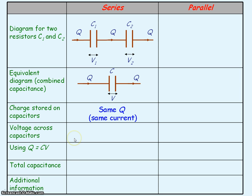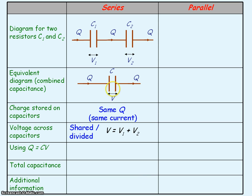Voltage in series is divided or shared between the components, so our total voltage V is equal to V1 plus V2. We're going to use the equation for capacitors, Q equals CV, and rearrange it in terms of charge and capacitance, so the voltage V equals Q divided by C, V1 equals Q divided by C1, and V2 equals Q divided by C2.